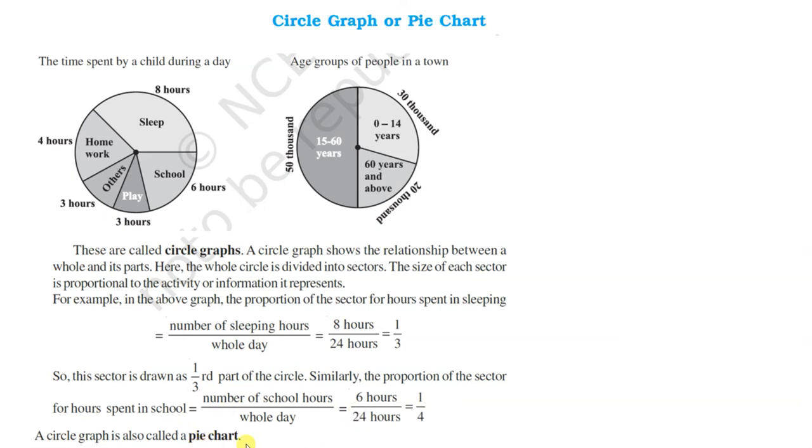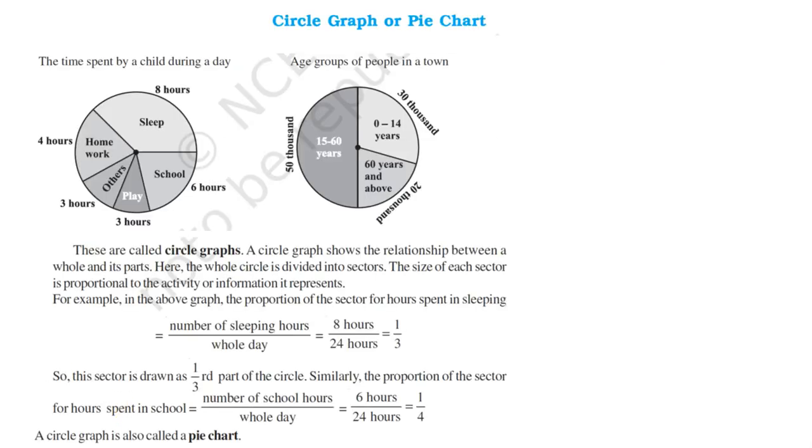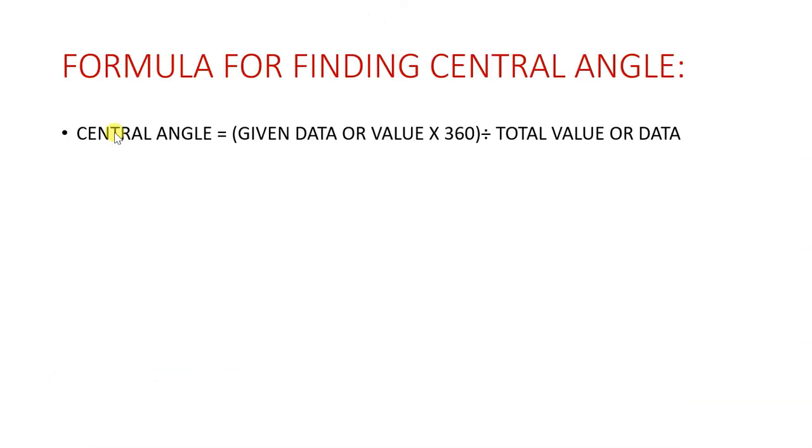Circle graph is also called a pie chart, and the formula for finding the central angle, the angle which each sector is making at the centre, means these angles. These angles are called central angles or sector angles. The formula for finding the central angle is given data or value multiplied by 360 degrees divided by total value or data.